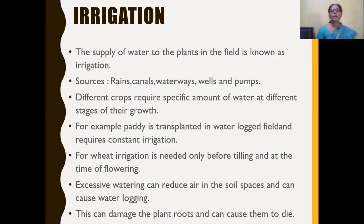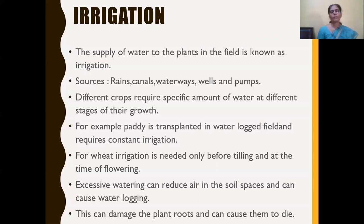Now we will learn the next agricultural practice after soil replenishment — irrigation. The supply of water to plants in the field is known as irrigation. Water is very important for plants because soil nutrients get dissolved in water and enter the plants along with it. Sources of water include rains, canals, waterways, wells, and pumps.